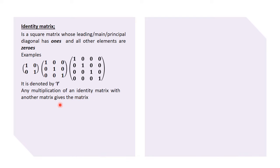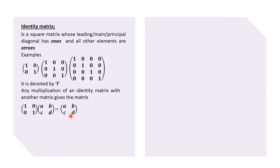The identity matrix is normally denoted by the uppercase letter I. Any multiplication of an identity matrix with another matrix gives that particular matrix. For example, we have the two by two identity matrix [1, 0; 0, 1] multiplied by the matrix [a, b; c, d], or even the other way around — beginning with [a, b; c, d] multiplying by the identity matrix.